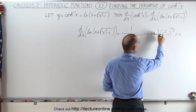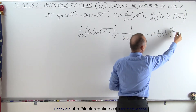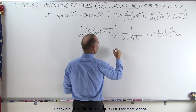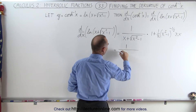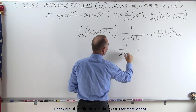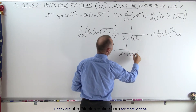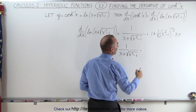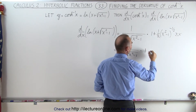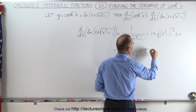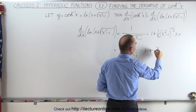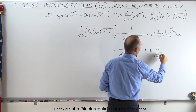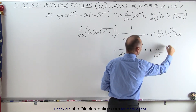We can see that the 2 will cancel out with that 2, and that means this is equal to 1 over x plus the square root of x squared minus 1, times 1 plus x divided by the square root of x squared minus 1.